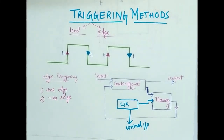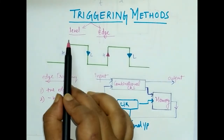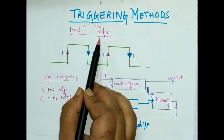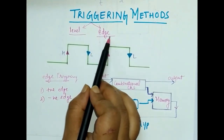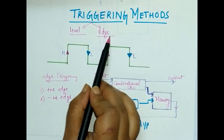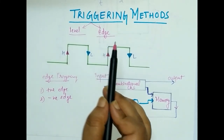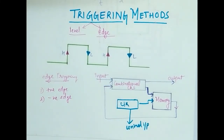So there are two types of triggering: one is level triggering and the other one is edge triggering. In the next class we will discuss more about the sequential circuit. Thank you for watching the video. If you have any suggestions or doubts you can put them in the comment section or contact me.